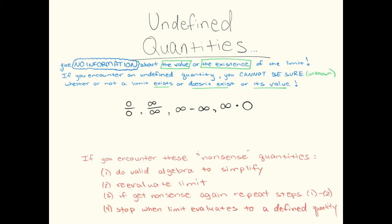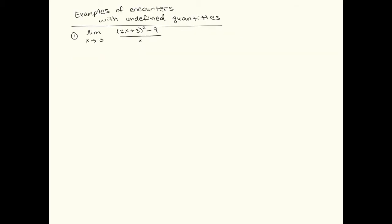If you encounter any of these nonsense quantities, what you have to do is use algebra. Once you get stuff to cancel out, then you re-evaluate the limit and see if you get an answer. If you still get an undefined quantity, then you have to redo more algebra. Get more stuff to cancel out and then re-evaluate the limit. You keep doing this process until you get something that actually makes sense. So let's get to it. Let's actually do an example where we encounter an undefined quantity.